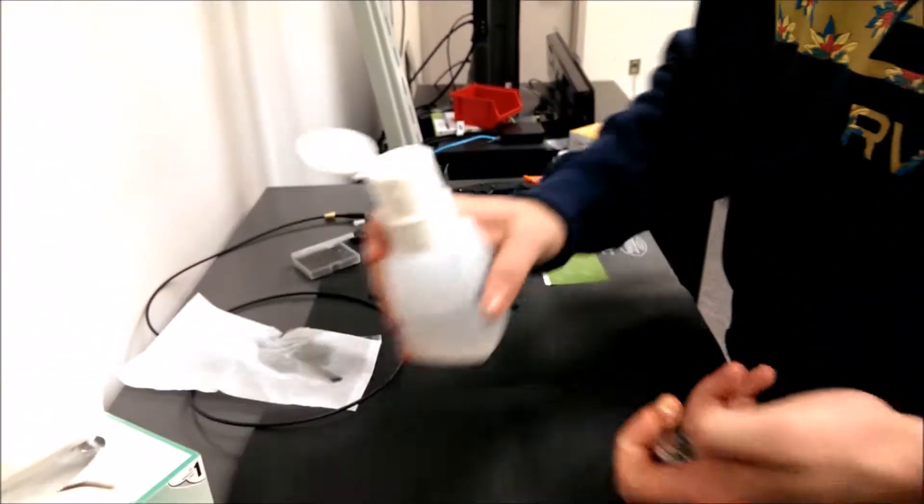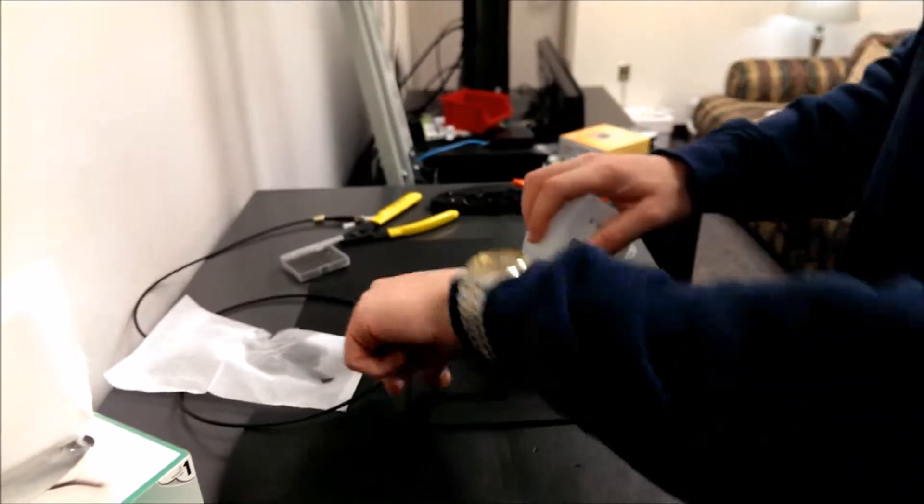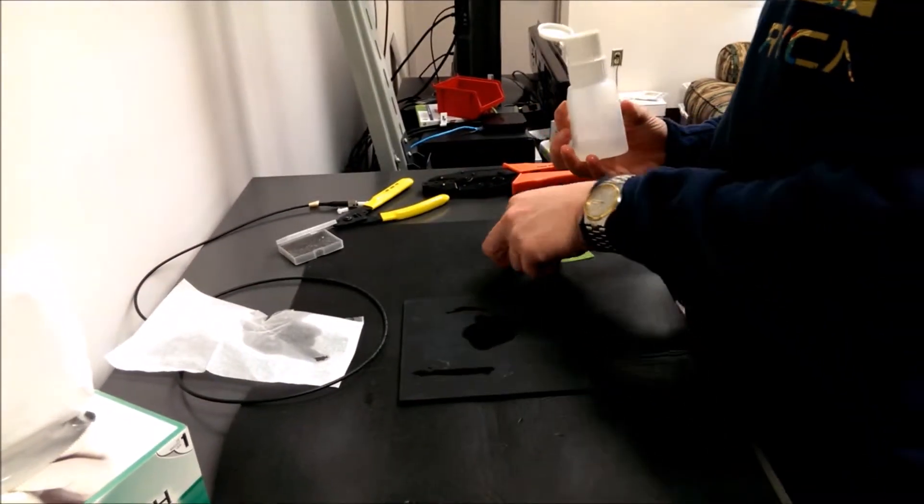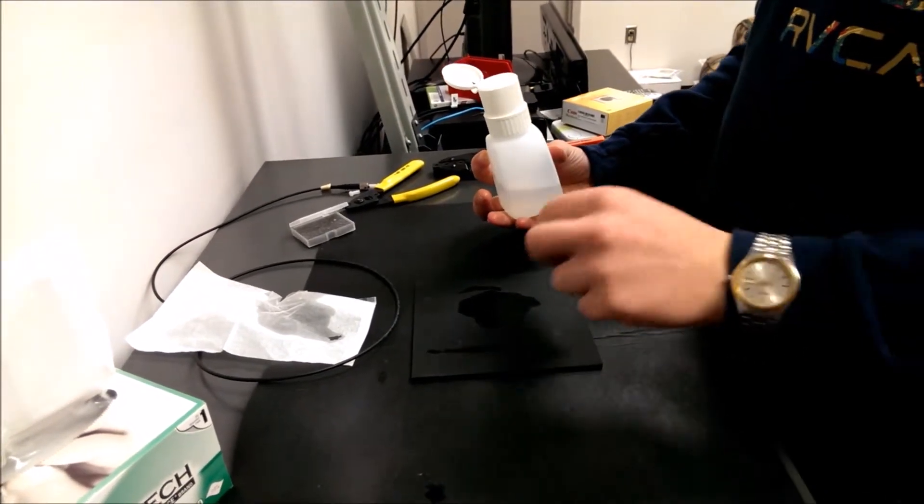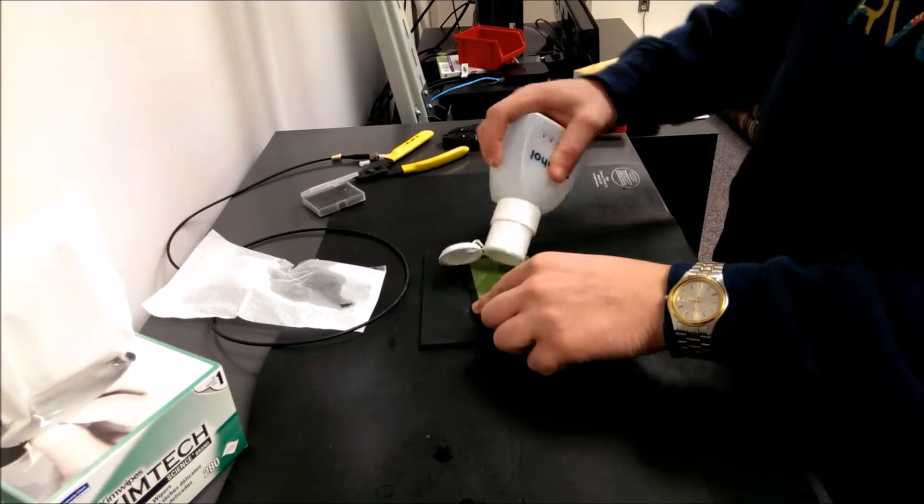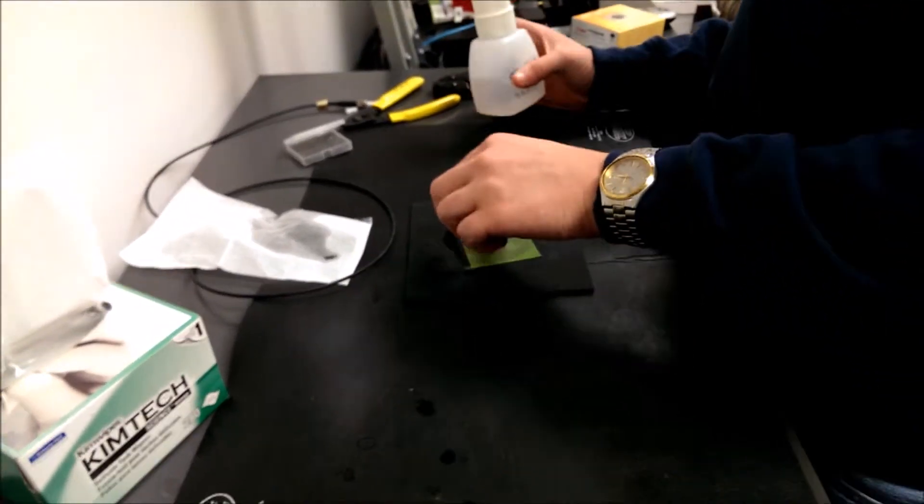And then you take some alcohol and you put it on your durometer pad, doesn't need to be a lot. Then you put your polishing film down and then some more alcohol on top. Put your puck down.